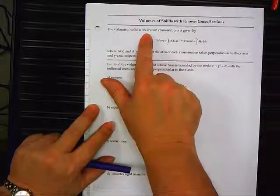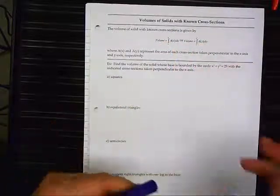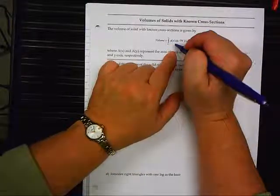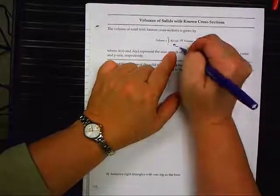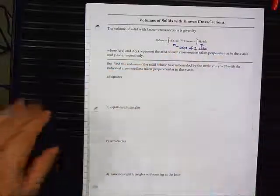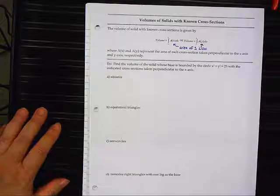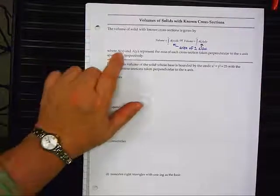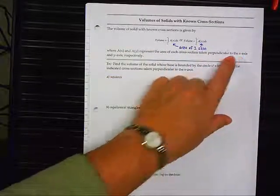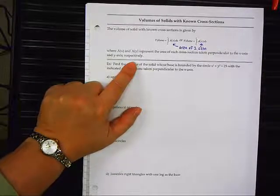The volume of a solid with a known cross-section is given by these two formulas. The integral from A to B of A of X, DX, or the integral from C to D of A of Y, DY. These two formulas is the area of one slice. So, basically, you've got to know what shape the slice is, and they will tell you. And you're going to put into that formula the area of one of those slices. And then it says where A of X and A of Y represent the area of each cross-section, perpendicular to the X-axis and Y-axis, respectively. That's a lot of words, so let's make that a little more simple.